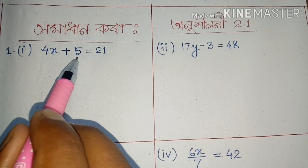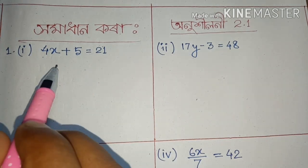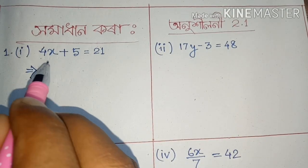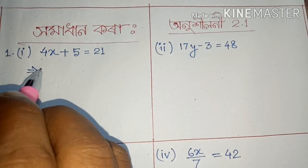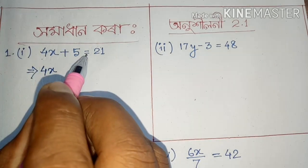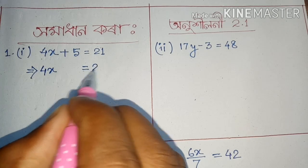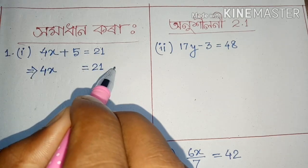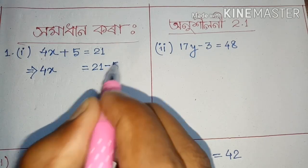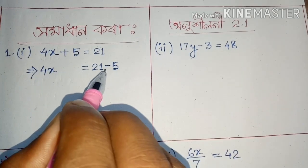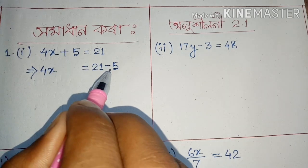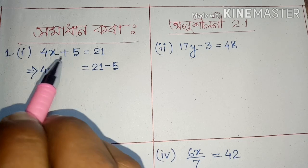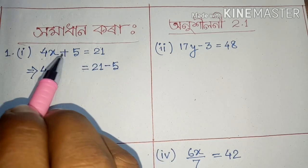4x plus 5 equals 21. We have to write: 4x plus 2 equals 21. We write a plus 5, and then a minus on the second detail, a minus.